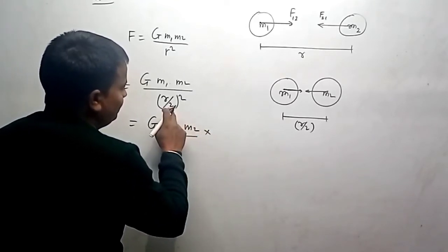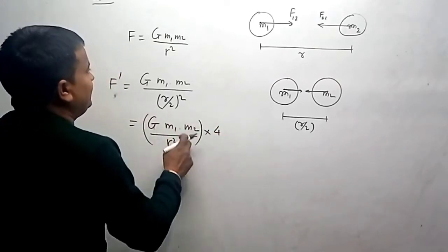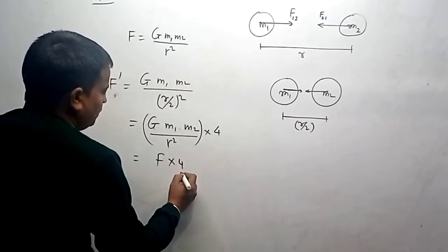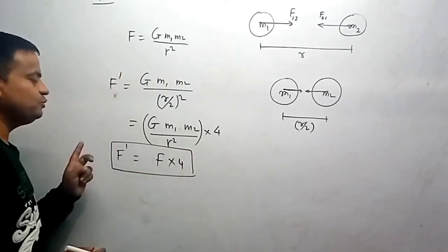Half whole square is four, and it will be multiplied. You can see this quantity is taken from here, so this is F into four. So what we see, F dash, this changed force, has been changed to four times.